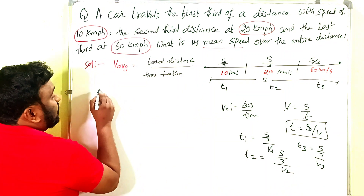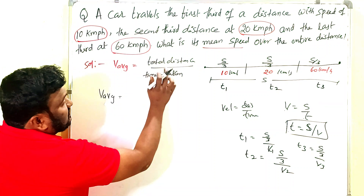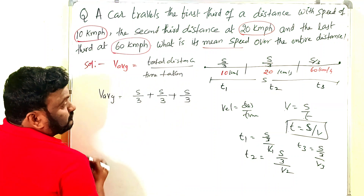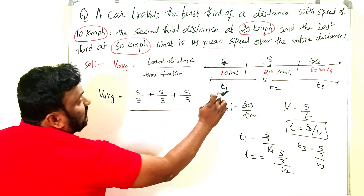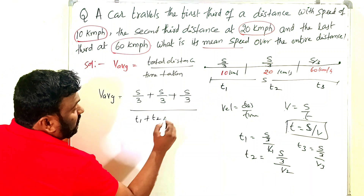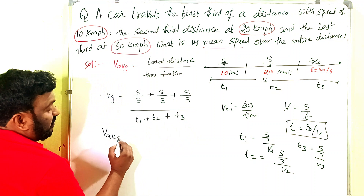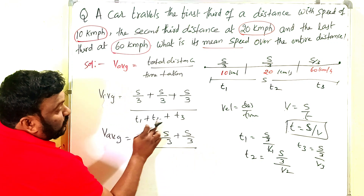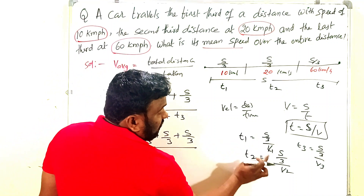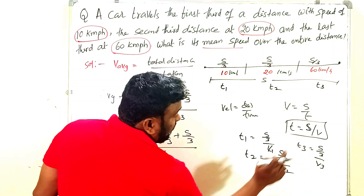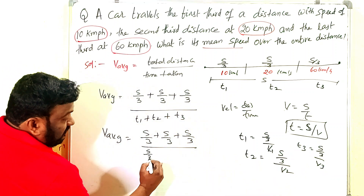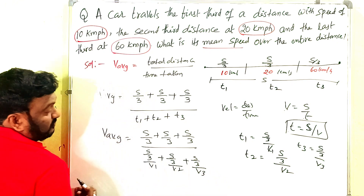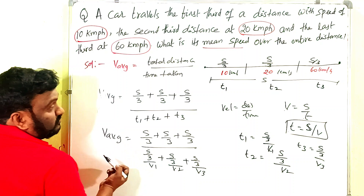Now substituting into the average speed formula: v_average = total distance / total time. The total distance is S/3 + S/3 + S/3 = S. The total time is t1 + t2 + t3. Substituting: v_average = S divided by [(S/3)/v1 + (S/3)/v2 + (S/3)/v3]. Since S/3 is common in both numerator and denominator, it cancels out.